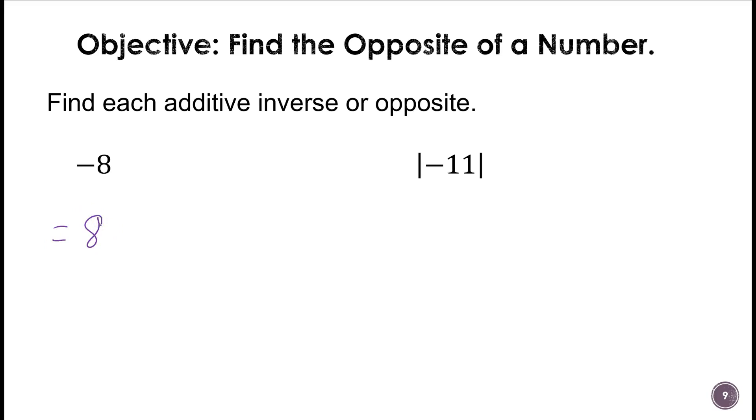In this case, first I would want to evaluate this. This is the absolute value of negative 11. The absolute value of negative 11 is 11, and so the opposite would be negative 11. Remember, when we find absolute values, we get positive numbers.